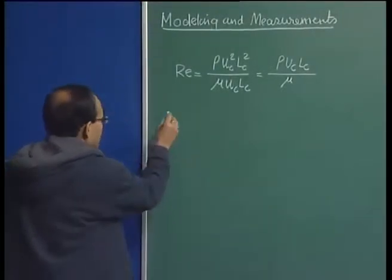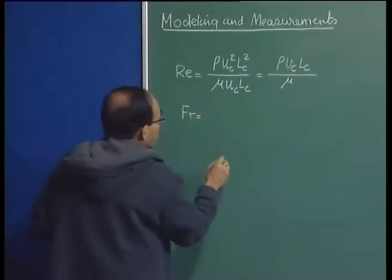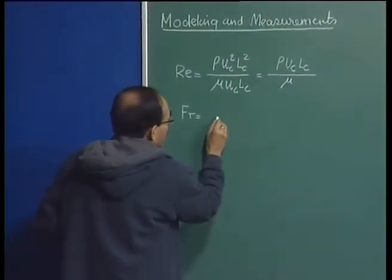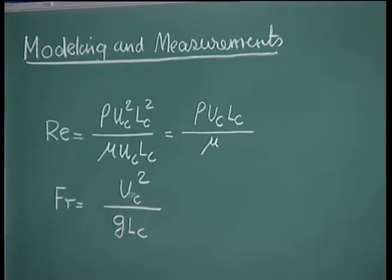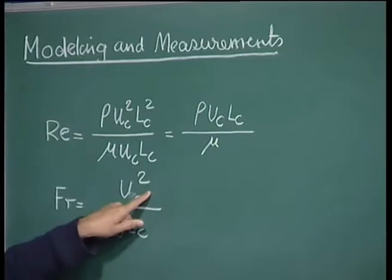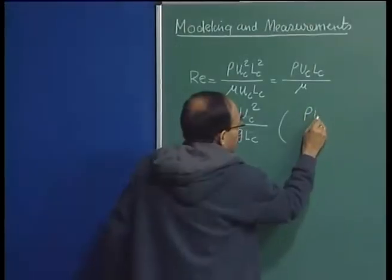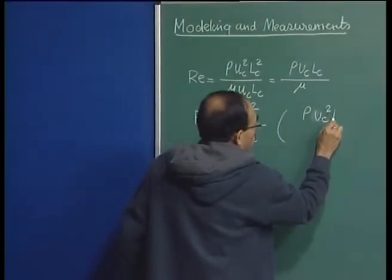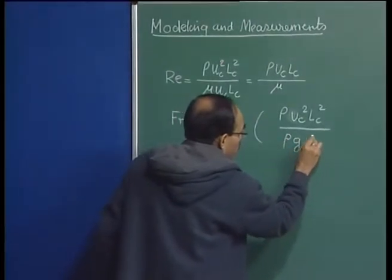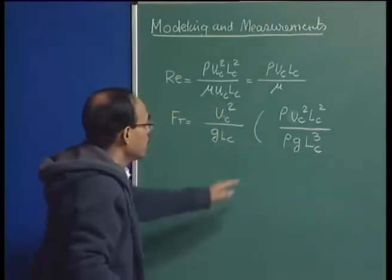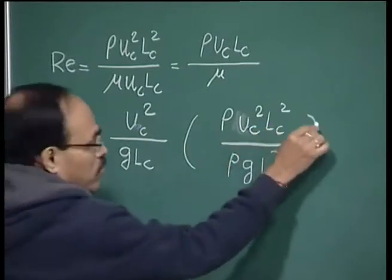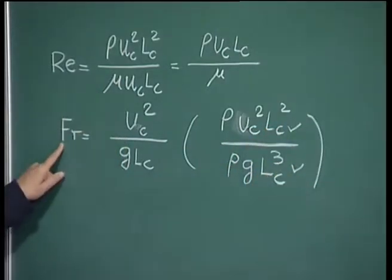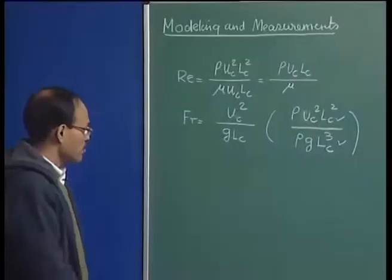Similarly, the Froude number definition comes out as the ratio of inertial force to gravitational force. The gravitational force is ρgL_c³. After simplification, with ρ and L_c² canceling, the Froude number equals U_c² / (g · L_c). So the characteristic velocity squared divided by acceleration due to gravity times the length scale.